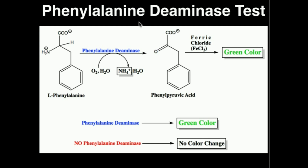The phenylalanine deaminase test specifically tests for the presence of the bacterial enzyme known as phenylalanine deaminase. This enzyme uses molecular oxygen to deaminate phenylalanine into the molecule known as phenylpyruvic acid or phenylpyruvate. The amine of the amino acid phenylalanine has been removed as ammonia and is replaced by a double-bonded oxygen in phenylpyruvic acid.